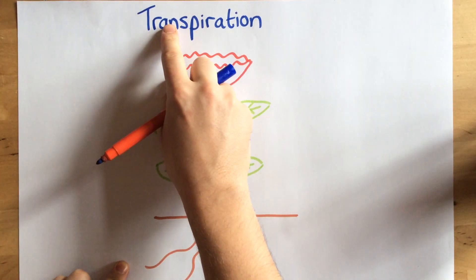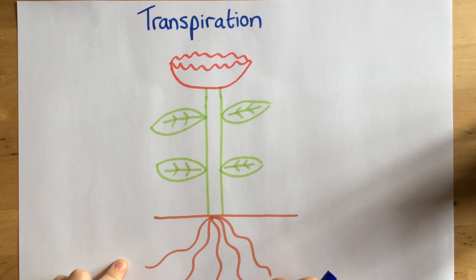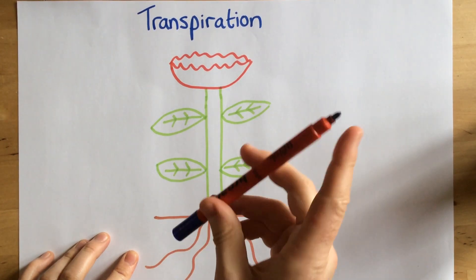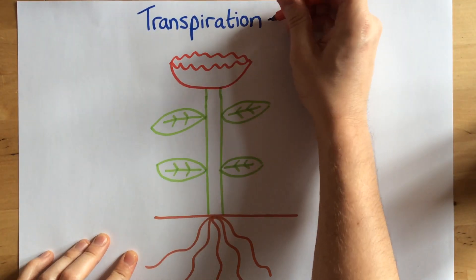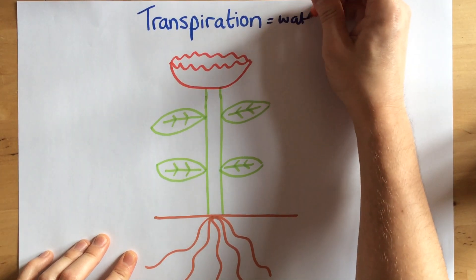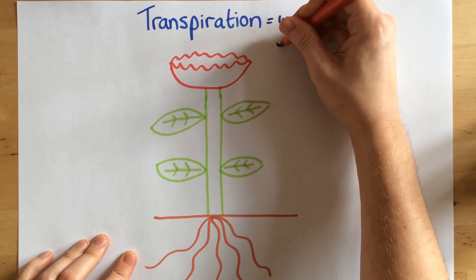Okay, today I'm going to talk to you about transpiration. We're going to see what this means and the different factors that affect it as well. So essentially, transpiration means water loss from a plant.